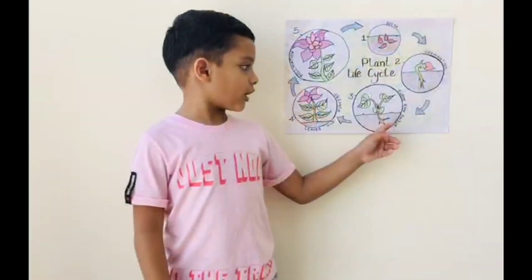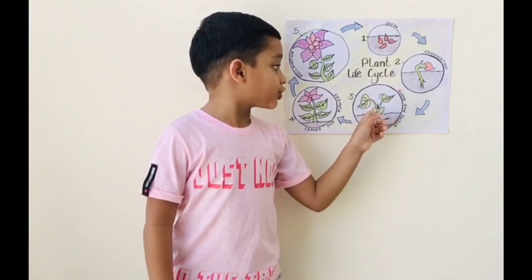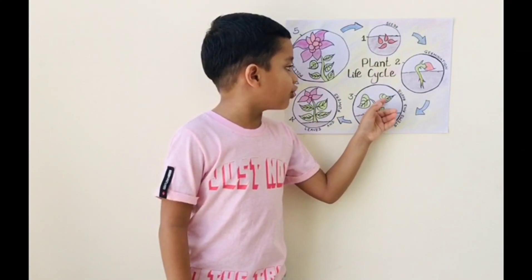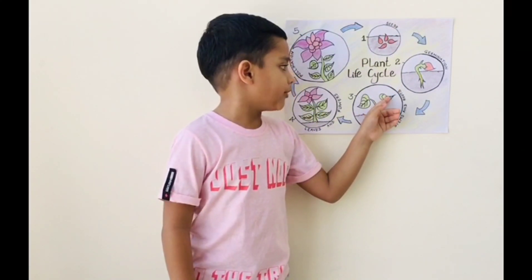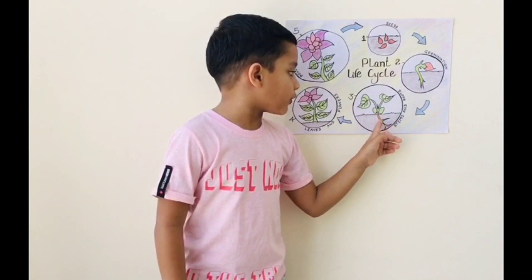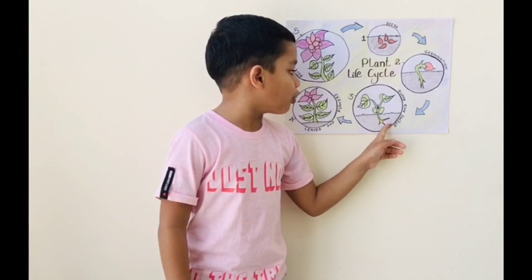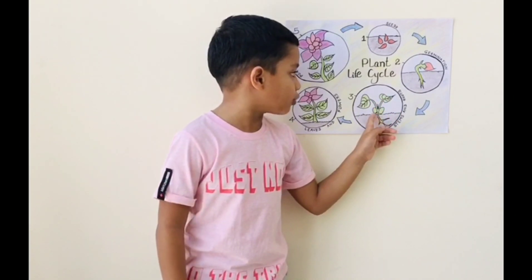Stems and roots. Stems push up towards the light. Roots grow down into the soil to hold and support the plant.